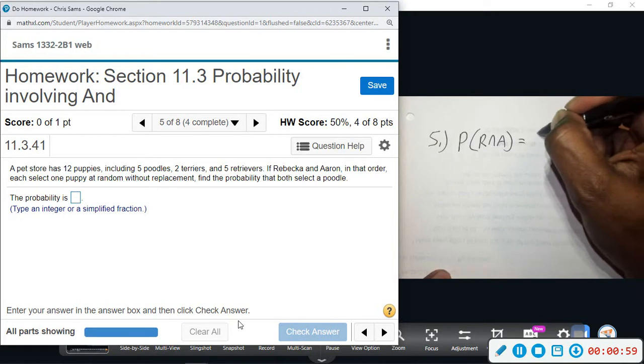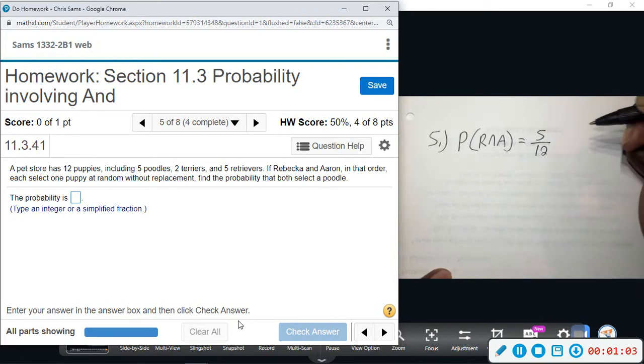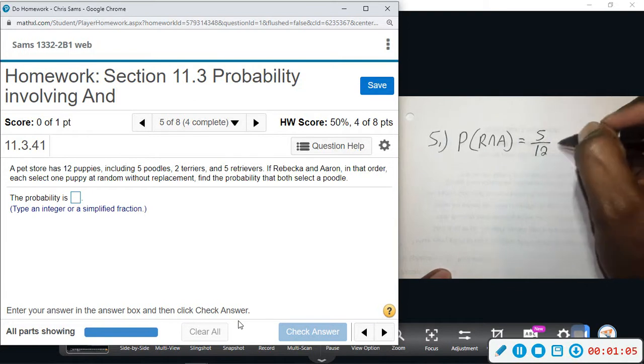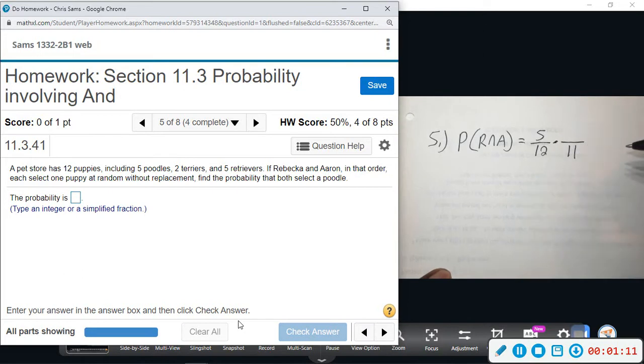So five out of twelve. Now assuming that she gets a poodle and does not put it back in there, that means that there's only going to be eleven dogs left. And out of the five poodles, if she got one, there's going to be four poodles left.